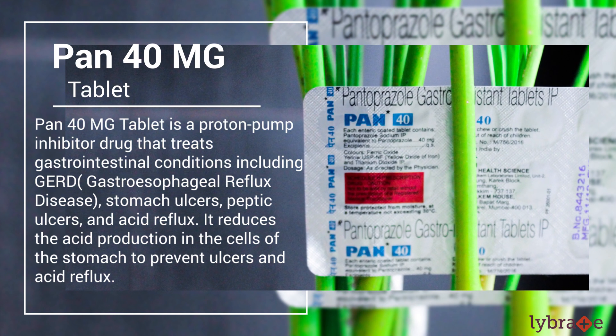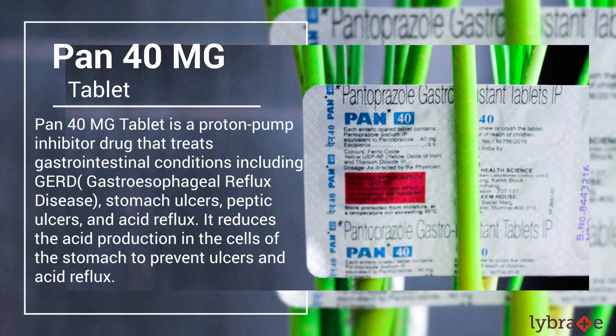Pan 40MG tablet is a proton pump inhibitor drug that treats gastrointestinal conditions including gastroesophageal reflux disease, stomach ulcers, peptic ulcer and acid reflux. It reduces the acid production in the cells of the stomach to prevent ulcers and acid reflux.